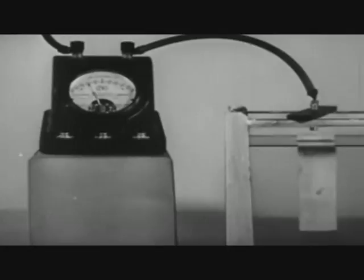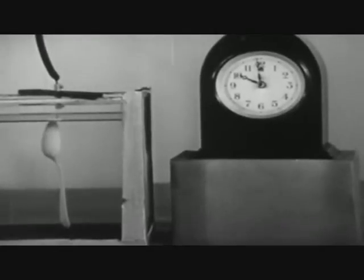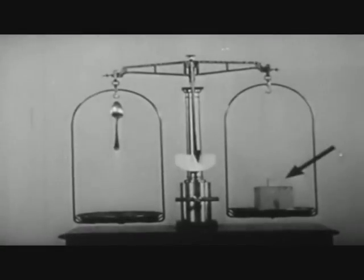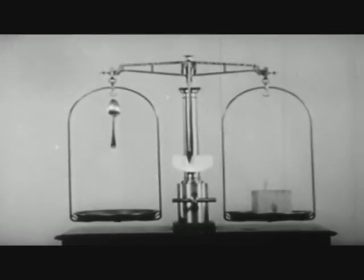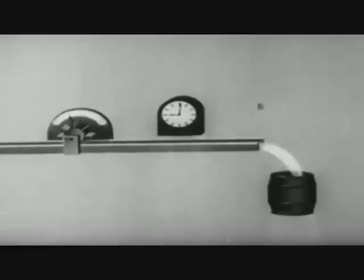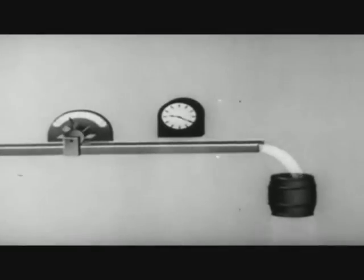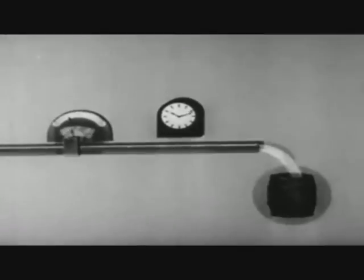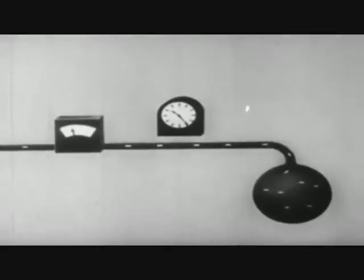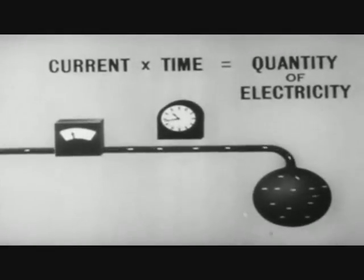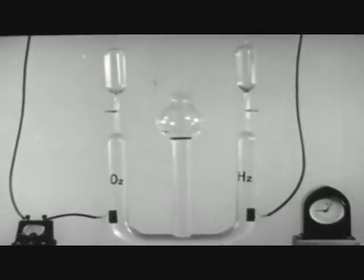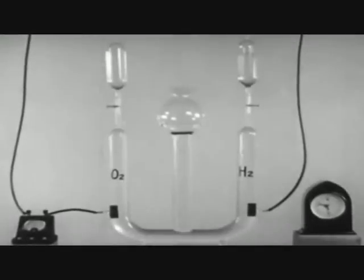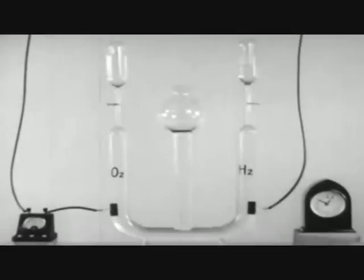We measure the current with an ammeter and the time with a clock. The amount of silver deposited during this time, represented by this additional counterweight, depends on the product of the current by the time. Just as in flowing water the total quantity of water is the product of the rate of flow by the time of flow, so in the case of electricity the product of current by time measures the total quantity of electricity.